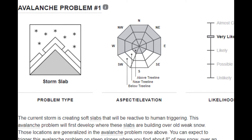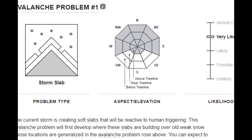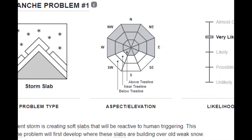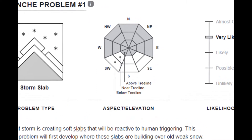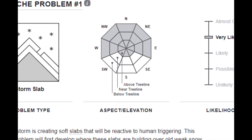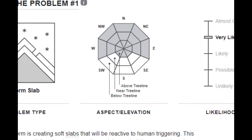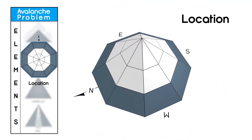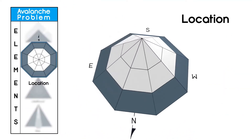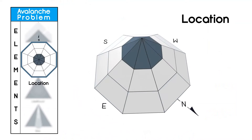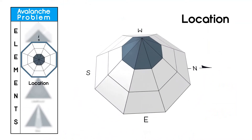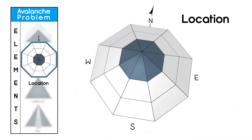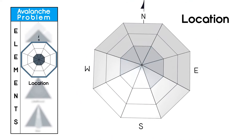The shaded regions on the distribution rows highlight the aspects and elevations where you are most likely, but not exclusively, going to encounter the problem. You can visualize the rows as a three-dimensional, cone-shaped mountain divided into eight aspects and three elevation bands.